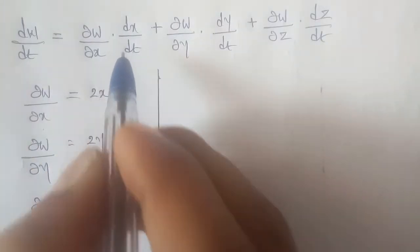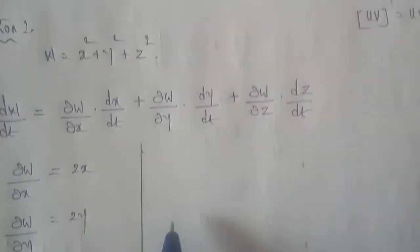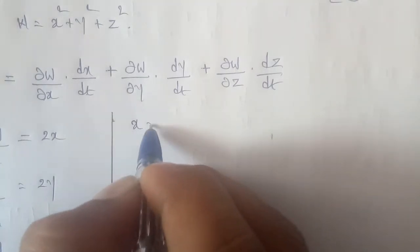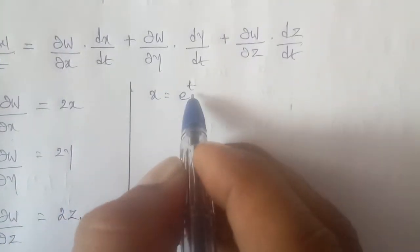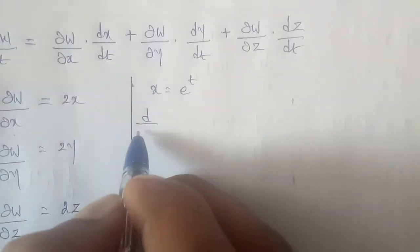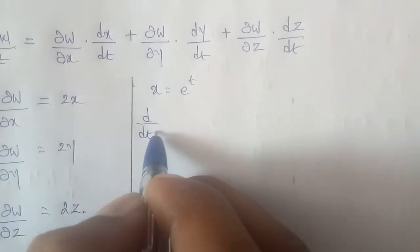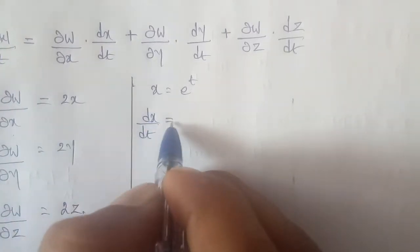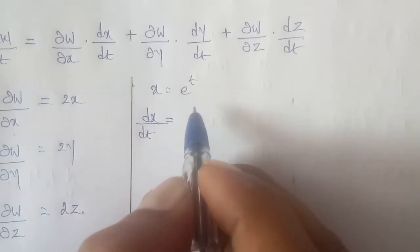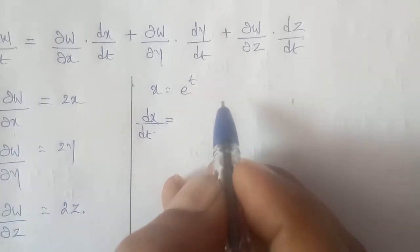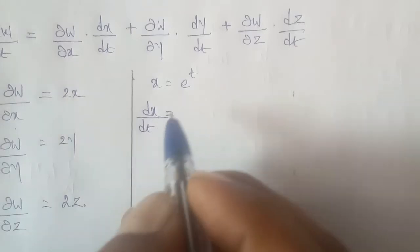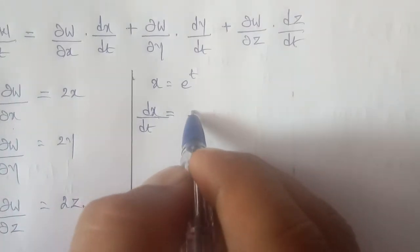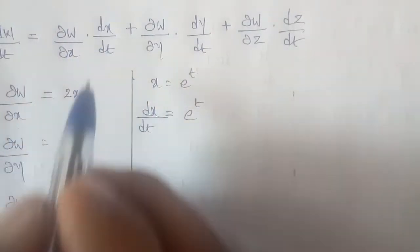Now finding dx/dt: since x = eᵗ, differentiating with respect to t gives dx/dt = eᵗ.